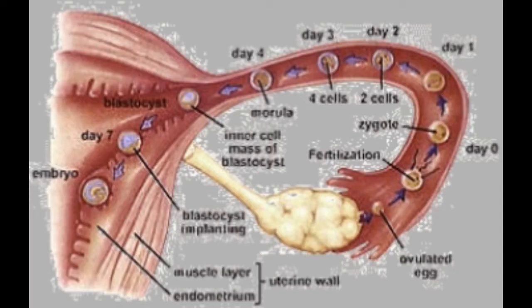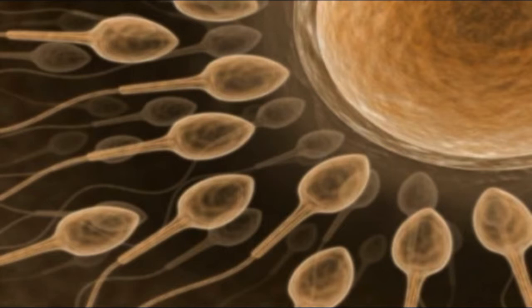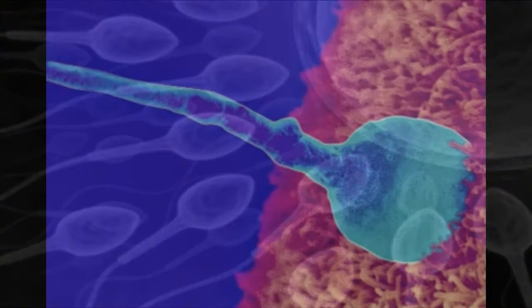The fallopian tube is where conception will occur. The egg, which arrives monthly — hours after it's released by the ovary — if it is present, many sperm will try to get in. When one actually burrows in and penetrates the cellular wall, chemical changes in the wall occur immediately, and this blocks out any other sperm.